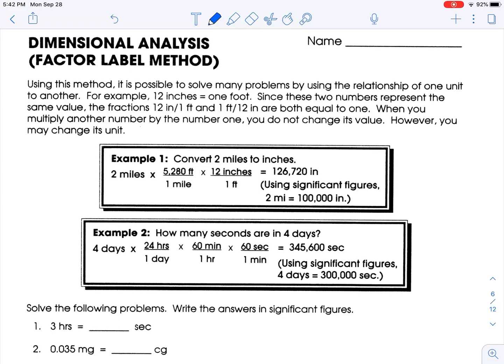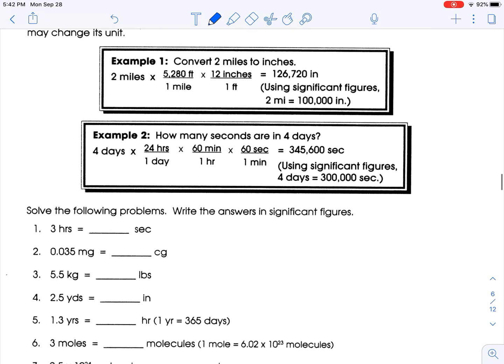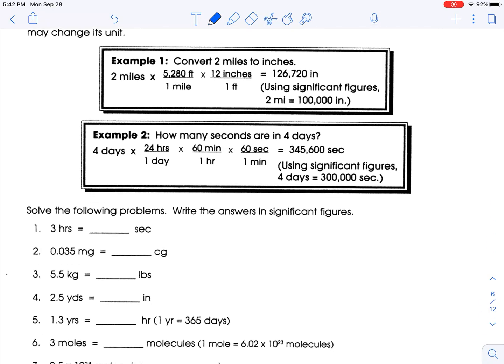Hey, welcome to dimensional analysis, the factor label method. We're going to need to know certain conversion factors. We place them as kind of fractions and we go from there. First thing I see that's glaring is that they're using 'sec' for seconds.